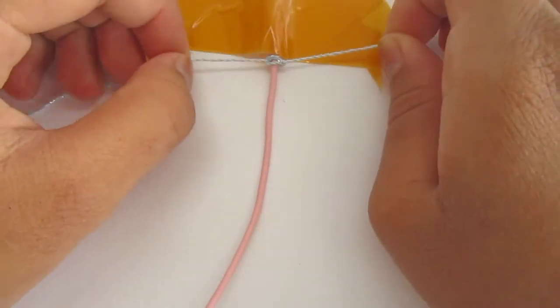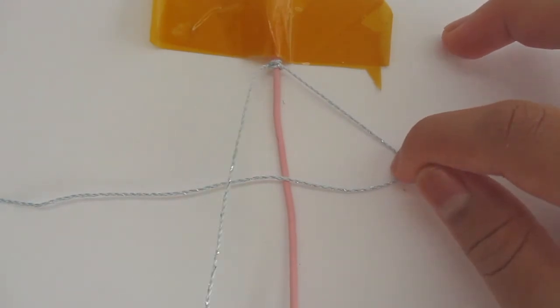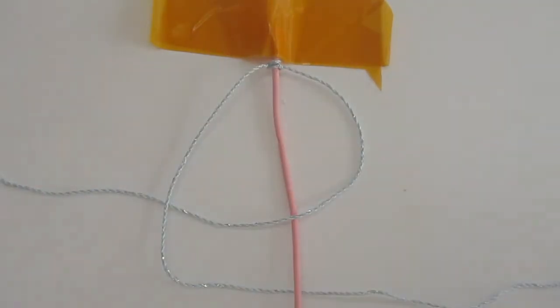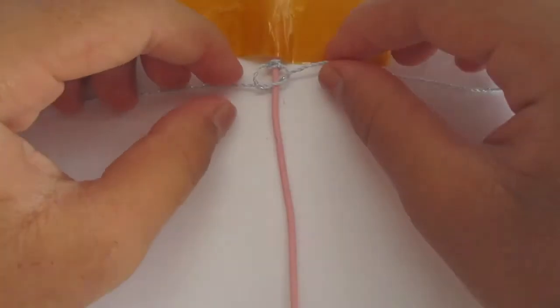For the second half, take your right string and make a backwards 4. Then take our left string, bringing it over the backwards 4, loop under the cord, and go through the 4's hole, pulling tight. And that is one set of square knots.